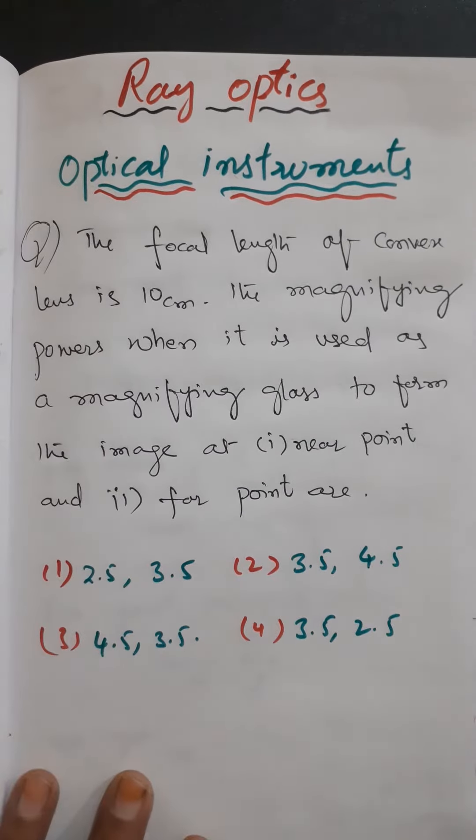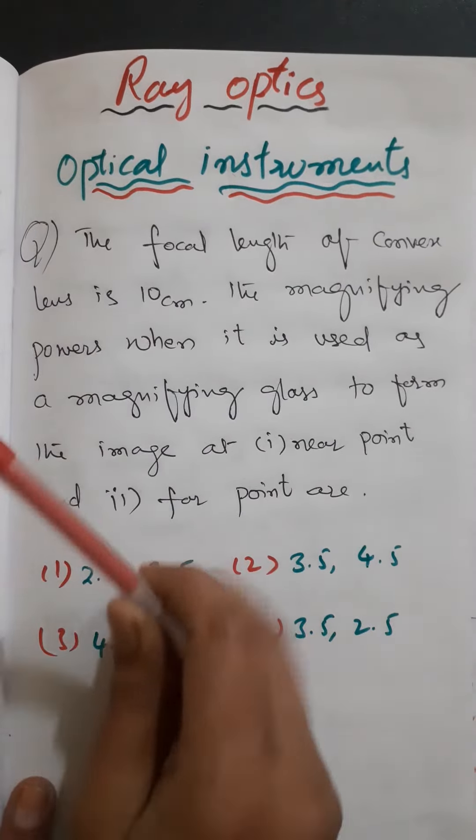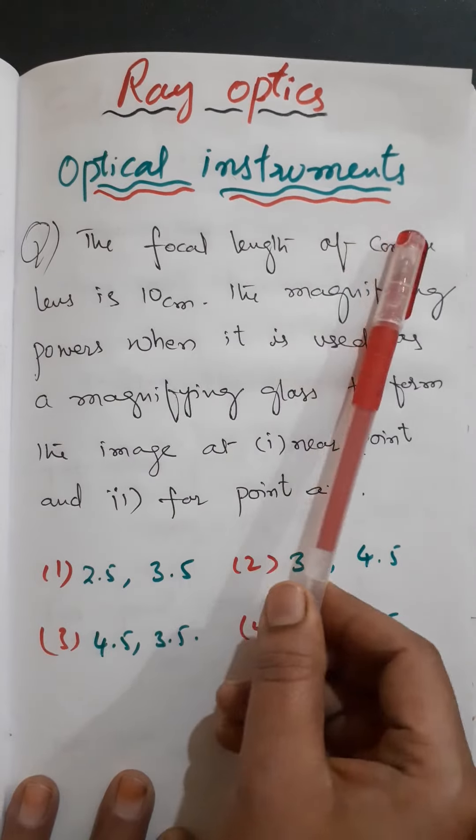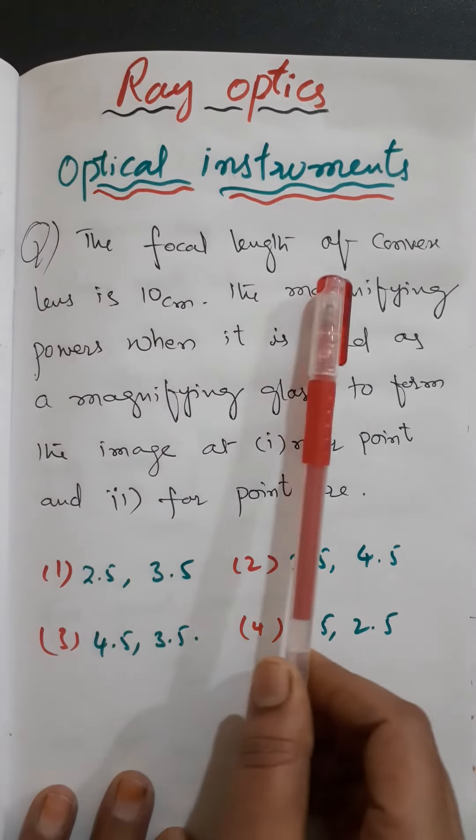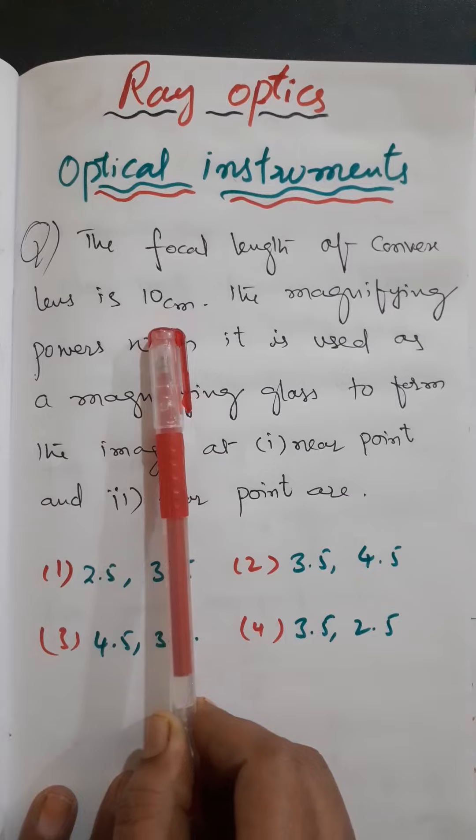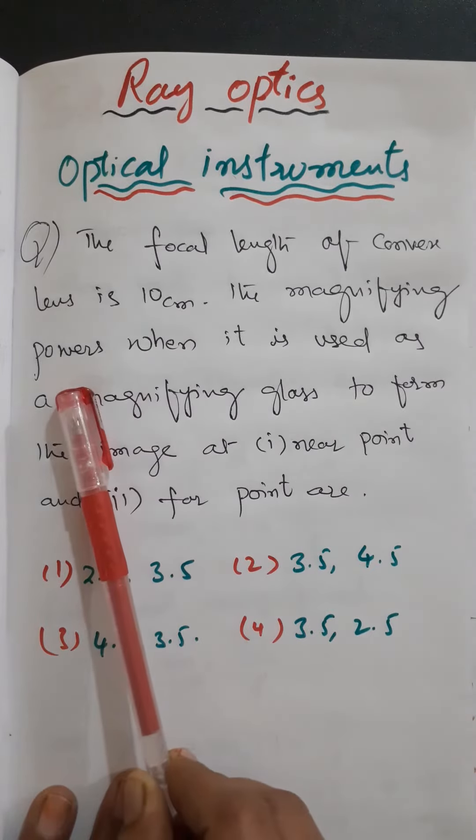Good morning friends. Today I am going to solve a ray optics problem. This is a problem in ray optics and optical instruments. Here the question is: the focal length of a convex lens is 10 centimeters. The magnifying powers when it is used as a magnifying glass to form the image at near point and for far point is given.